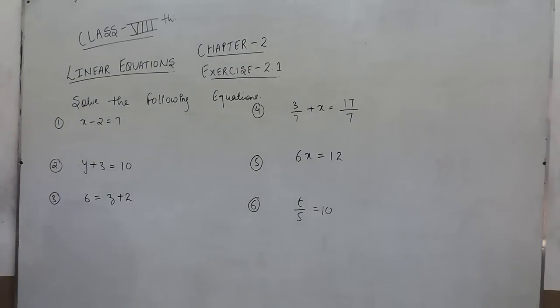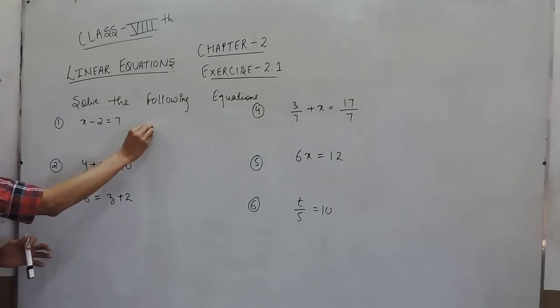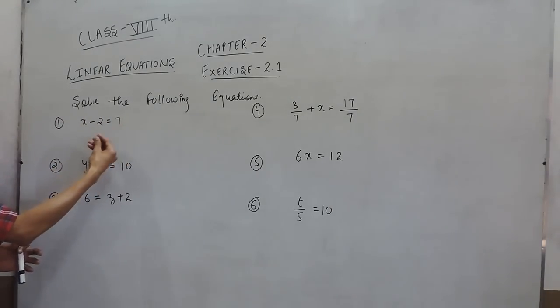While solving linear equations, one thing is very important: you have to bring all the variables on one side and constants on the other side of the equals sign. While doing this, you have to be certain that when a positive term goes to the other side, it becomes negative and vice versa.